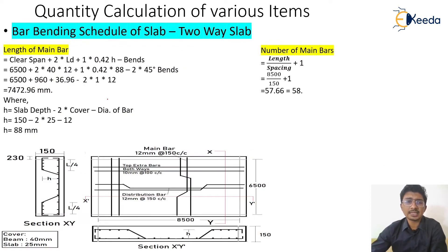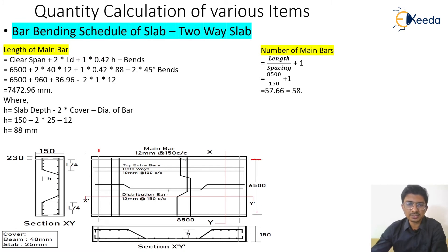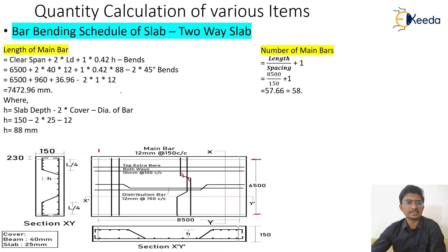Let us start with the length of the main bars. The main bars are the vertical ones. To calculate the length, we need the clear span, plus two times the development length on either side, plus one times 0.42h for the bend, minus two times the 45-degree bend deductions.